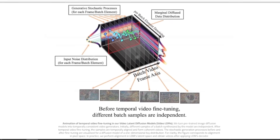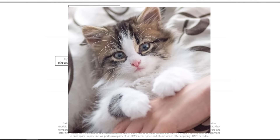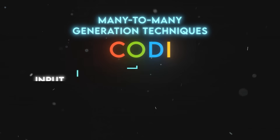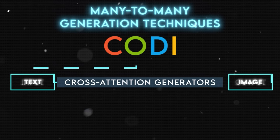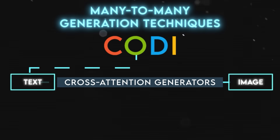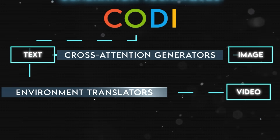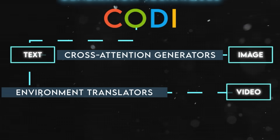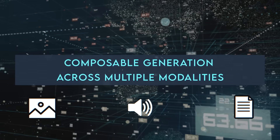LDMs are diffusion models that learn to map each modality into a latent space that is independent of the modality type — for instance, mapping an image of a cat into a vector of numbers representing its features. LDMs allow CODI to handle different modalities in a consistent way. Many-to-many generation techniques enable CODI to generate any output modality from any input modality. For example, CODI can use cross-attention generators to generate text from image or image from text, or use environment translators to generate video from text or audio by translating the input into an environment representation that captures its dynamics.